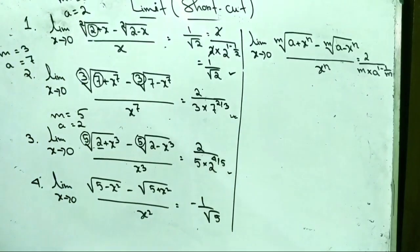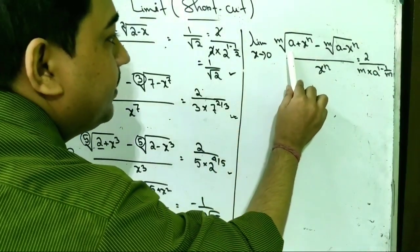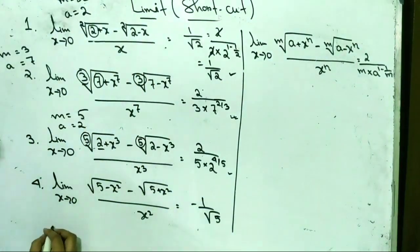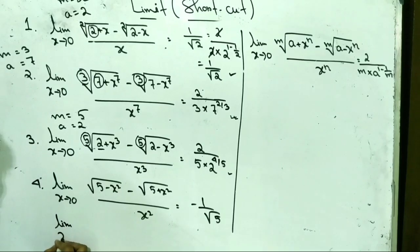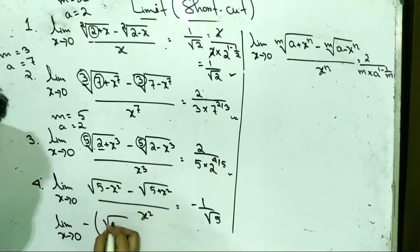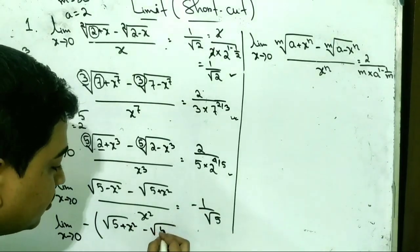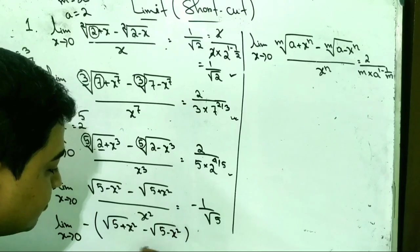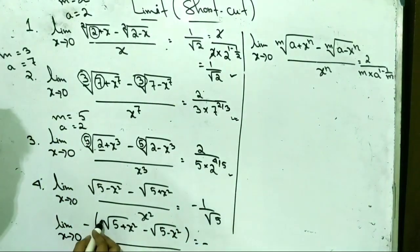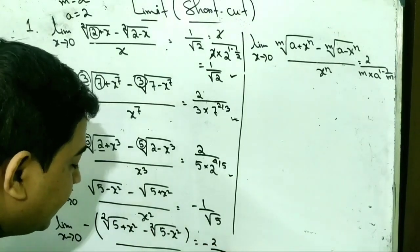For the third problem, m equals 5 and a equals 2. So the value is 2 by 5 into 2 to the power (1 minus 1 by 5), that is 2 to the power 4 by 5. For the last example, note that the plus term should come first — so take minus common — giving root over (5 plus x^2) minus root over (5 minus x^2), by x^2. Then the answer is minus 1 by root over 5.